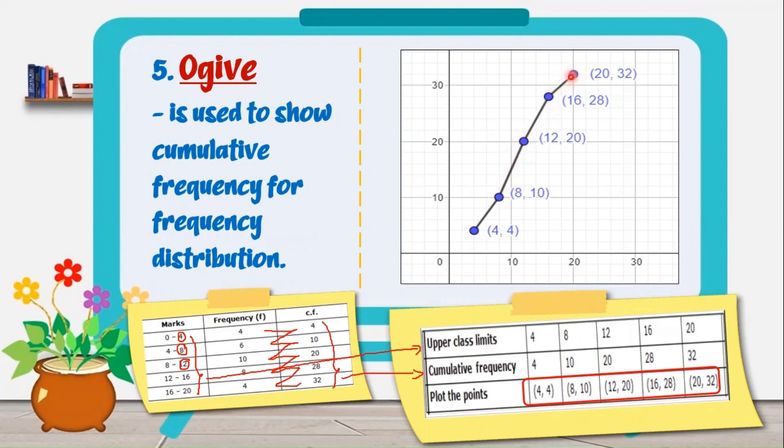16 and 28, and 20 and 32. So it looks like a line graph. Points are connected by a line.